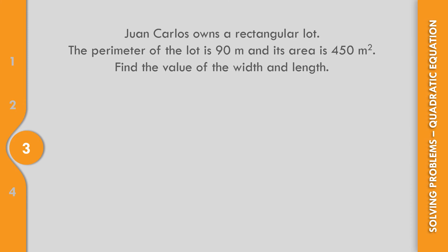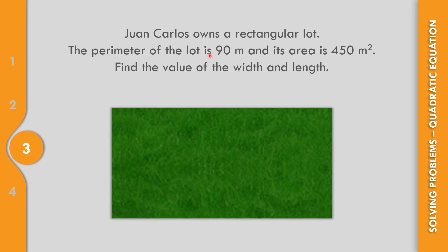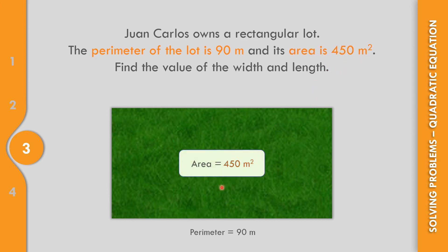For example number 3: Juan Carlos owns a rectangular lot. The perimeter of the lot is 90 meters and its area is 450 square meters. Find the value of the width and the length.